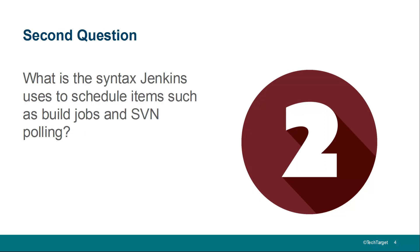Question number two: what is the syntax Jenkins uses to schedule items? Jenkins uses a cron job syntax — that is five asterisks, each separated by a space.